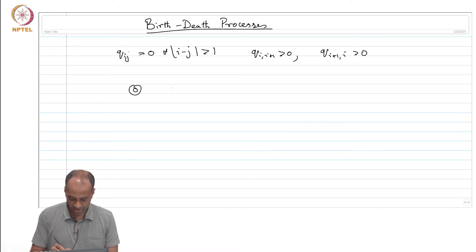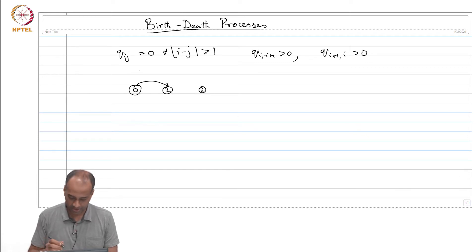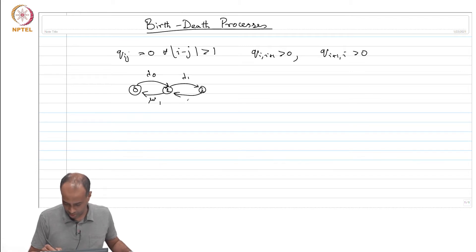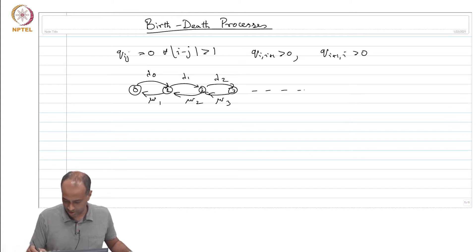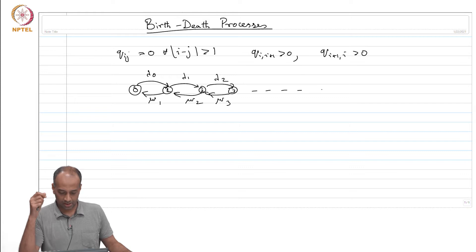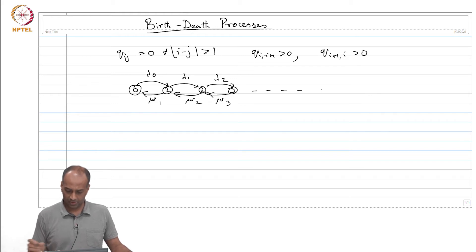If your state space is 0, 1, 2, etcetera — the non-negative integers — you have the following structure. We have Q_{0,1} which we call lambda_0, then mu_1, lambda_1, mu_2 and so on. I am drawing the Q_ij's; you can also draw the time-sampled version with lambda-delta, or the embedded chain with transition rates. This is probably the simplest way, showing all non-zero transition rates Q_ij.